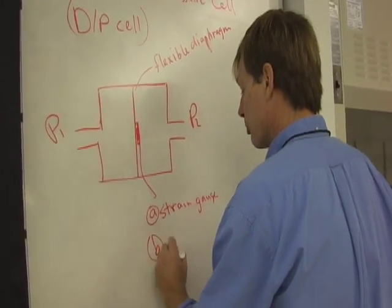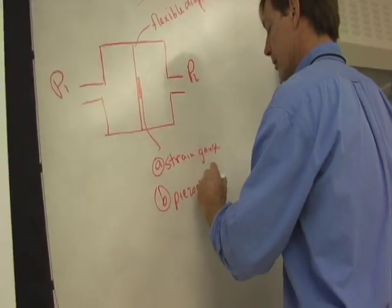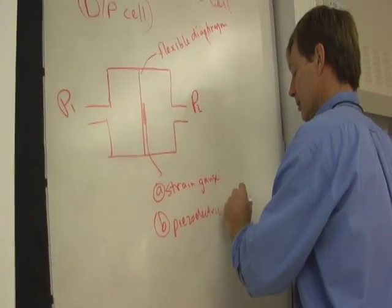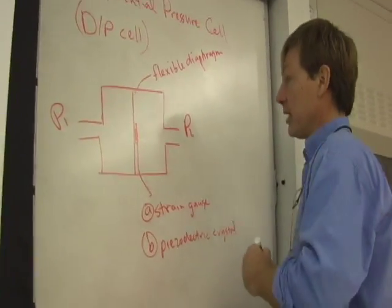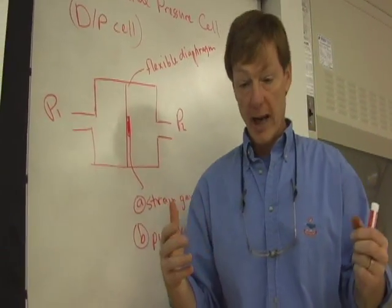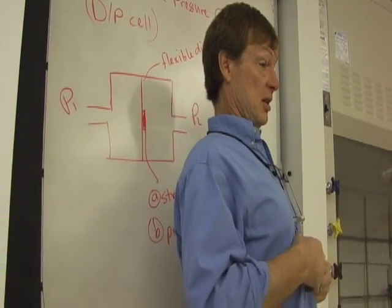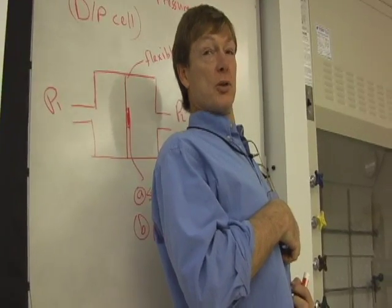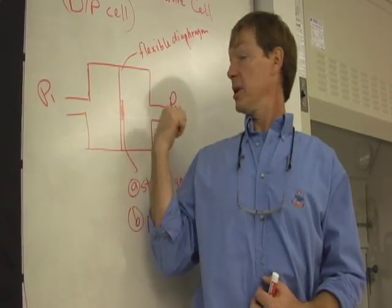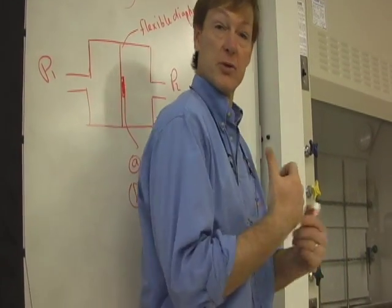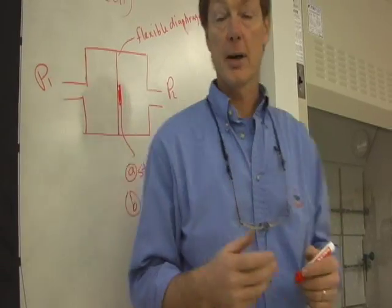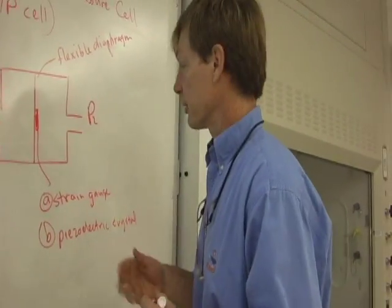I could use a piezoelectric crystal. So if I had a piezoelectric crystal there, then what would happen is if it got stretched, if P1 was greater, it would get stretched and the piezoelectric crystal would produce a voltage. If it got compressed because P2 is higher, it would go this way and it produces the opposite voltage. That's going to give you pretty fast measurements. That's nice.